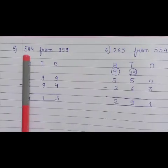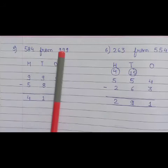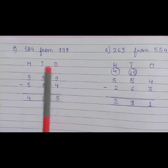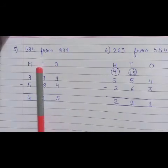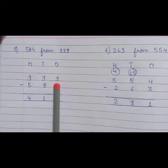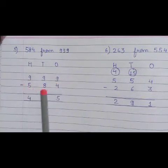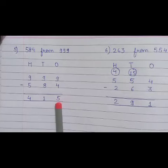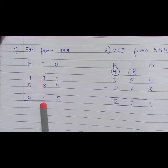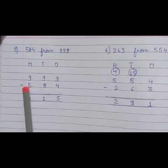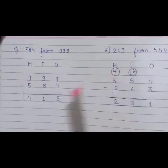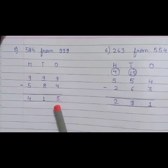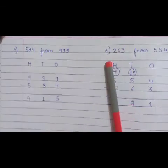Now next question is subtract 584 from 999. Write 1s, 10s and 100s. Then write 999 minus 584. 9 minus 4 equals to 5. 9 minus 8 equals to 1. And 9 minus 5 equals to 4. So 415 is our answer.